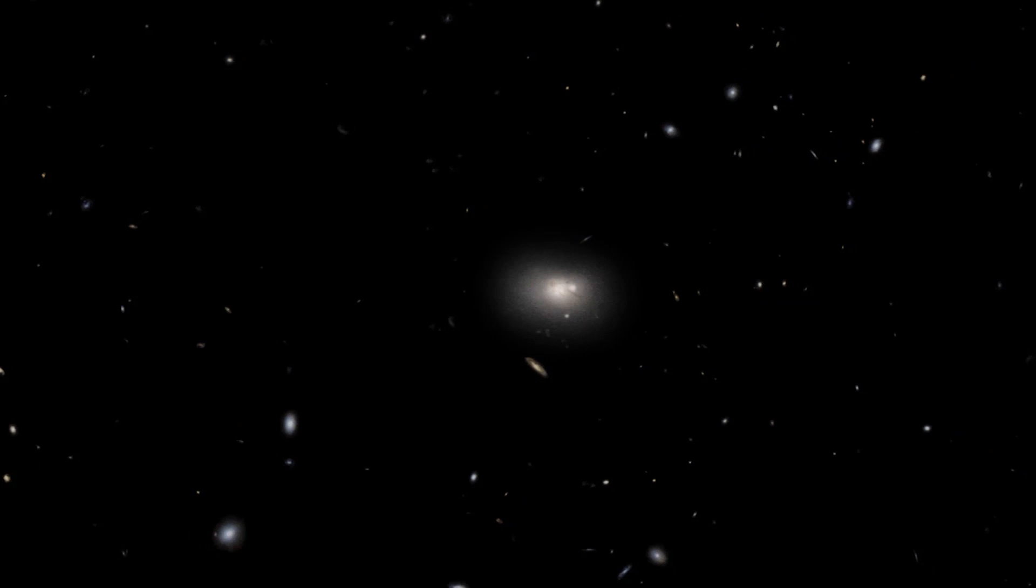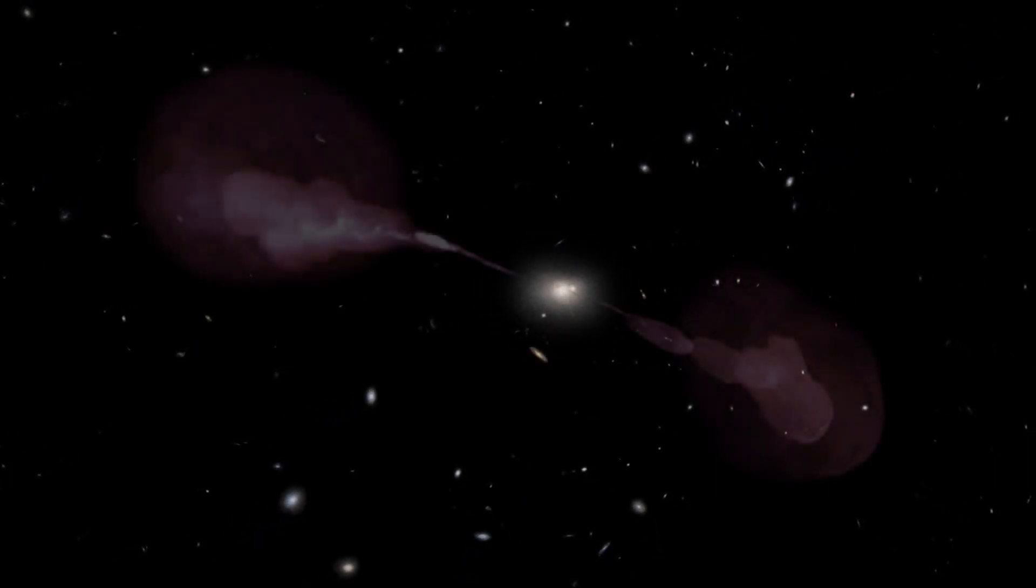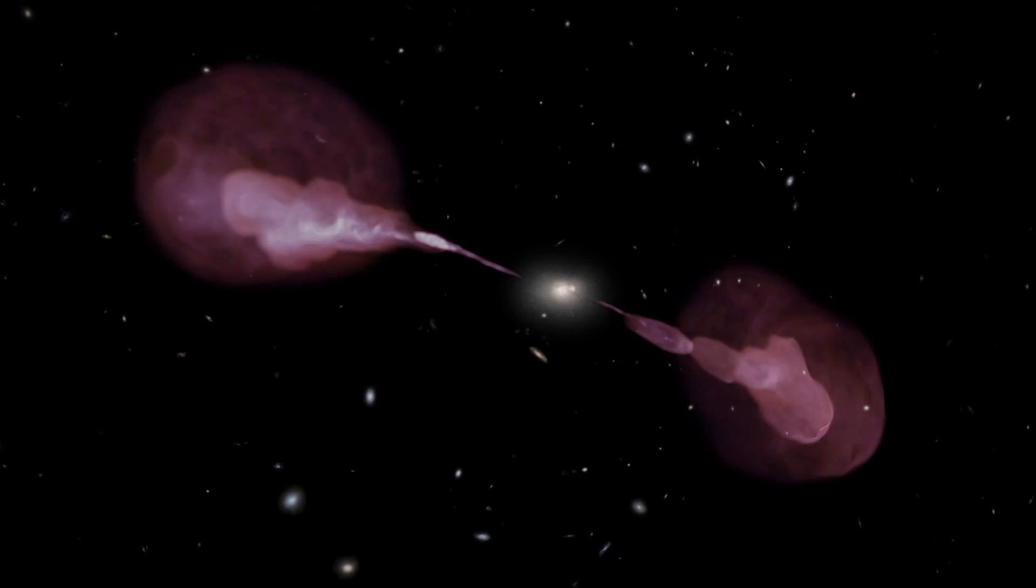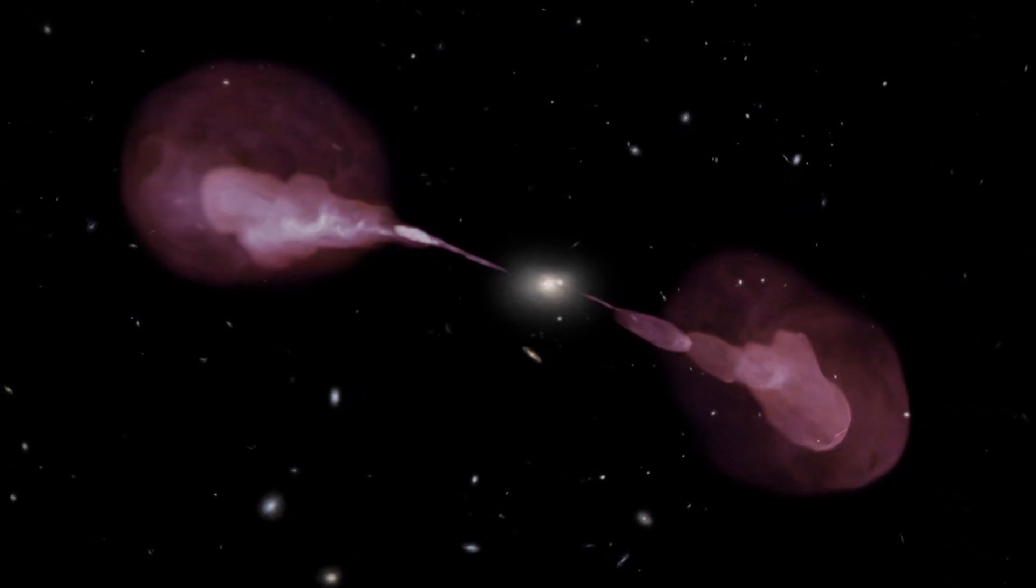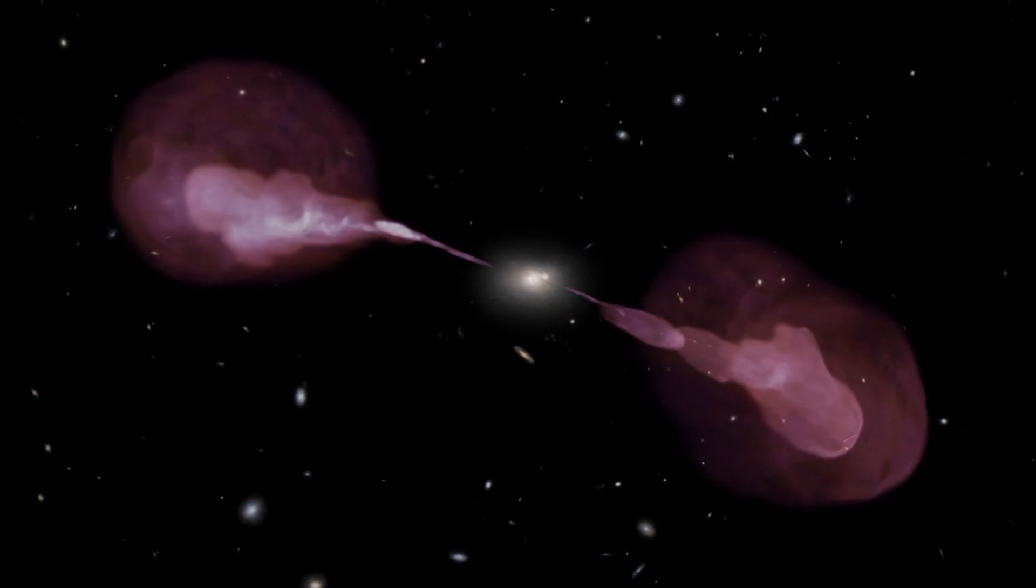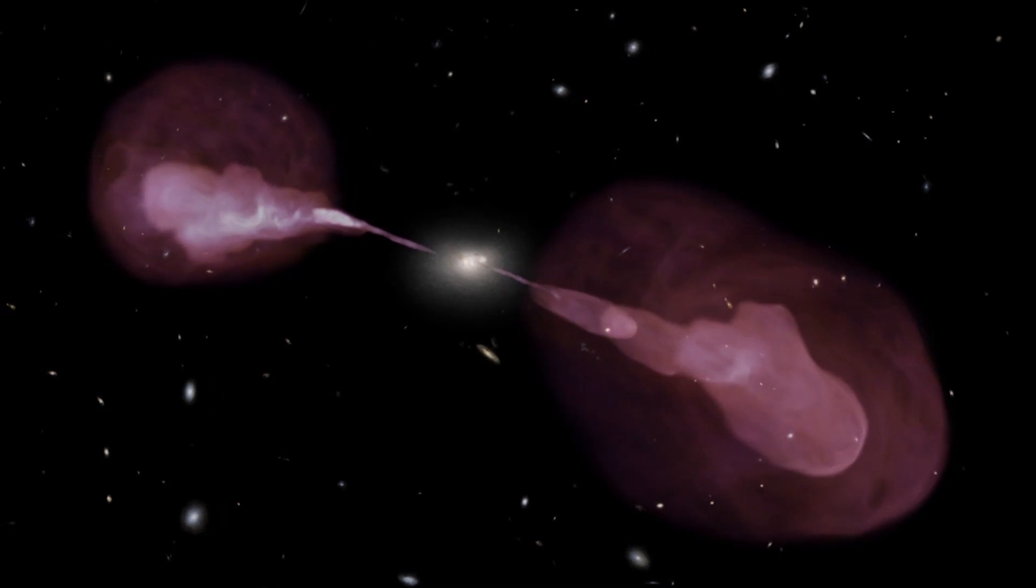In some instances, the jets travel outside the galaxy, resulting in massive radio lobes far from the active galaxy center. With the help of radio telescopes, it has been observed that galaxies can take on a variety of shapes, the majority of which resemble dumbbells.